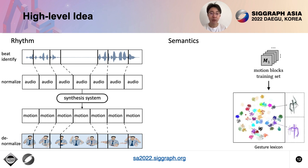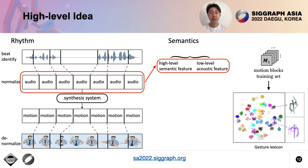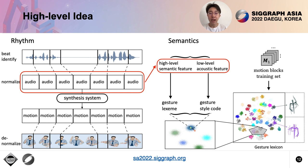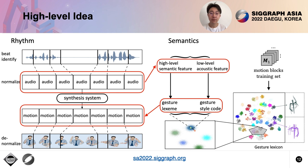For semantics, we first construct a gesture lexicon from a motion dataset. Then we disentangle high and low-level audio features from audio blocks, and use these audio features to interpret corresponding gesture lexemes and gesture style codes that come from the gesture lexicon. Finally, we use these gesture lexemes and style codes to generate target gesture motions.